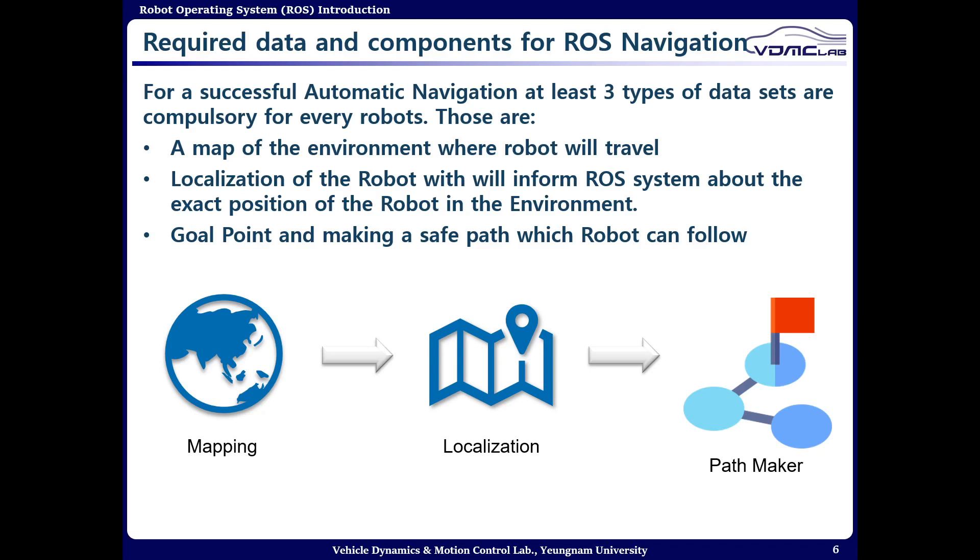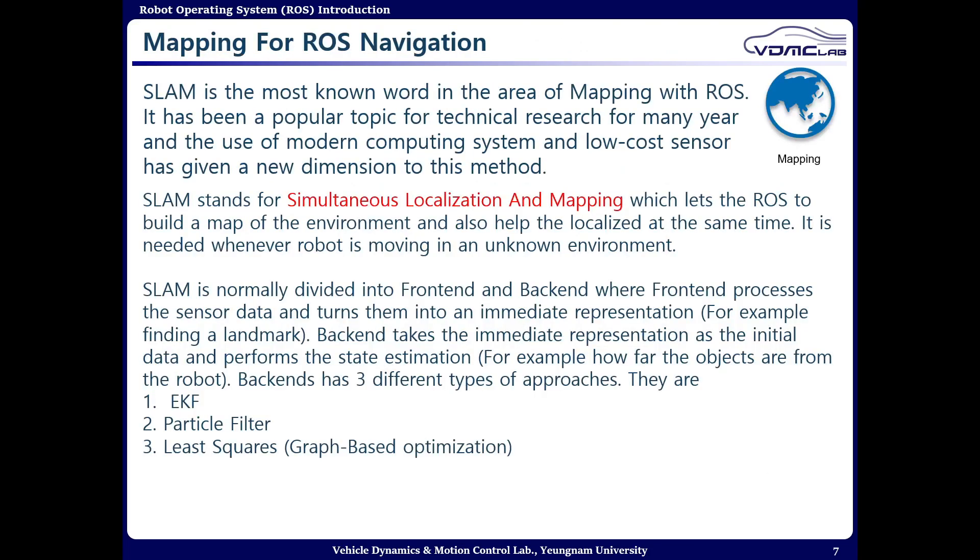First of all we are going for mapping. To talk about mapping, SLAM or you can say simultaneous localization and mapping is a very popular method to make a map of unknown environments. SLAM is normally divided into a frontend and backend, where frontend is responsible for taking and processing the sensor data and turning them into an immediate response, maybe like finding a landmark on your map or unknown environment.